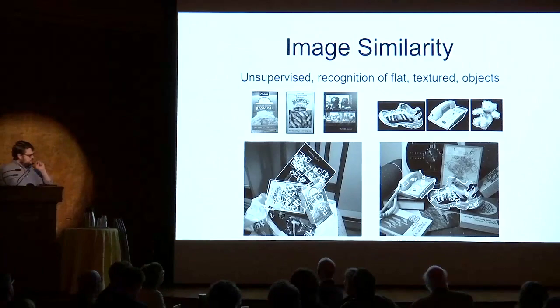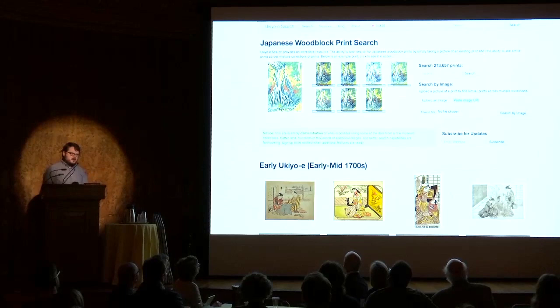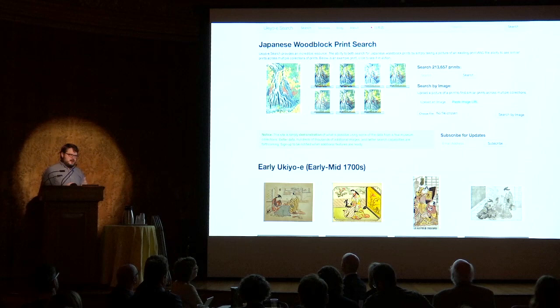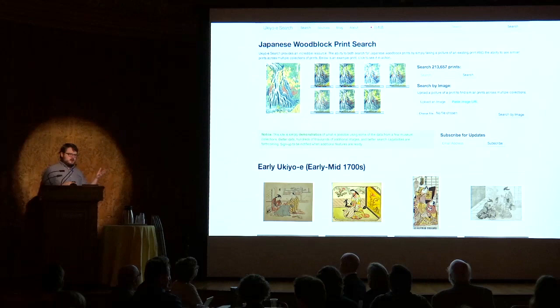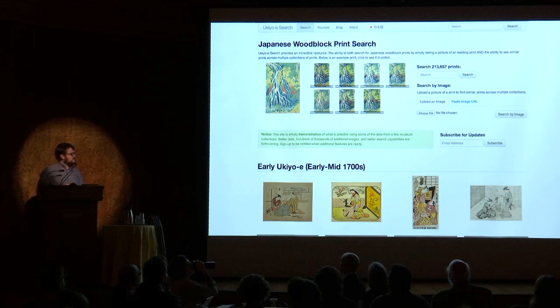So this is what I set out to build, back in 2011 and 2012. I built this database called UKA.org, which is a database of currently about 220,000 Japanese prints from about 20-some-odd institutions around the world, including public universities, museums, and private dealers and auction houses.